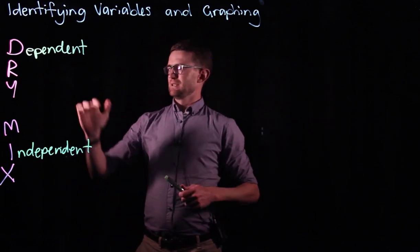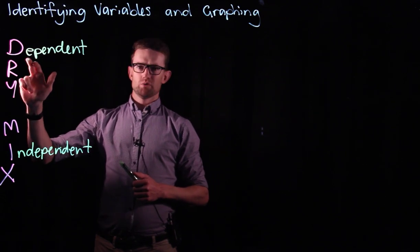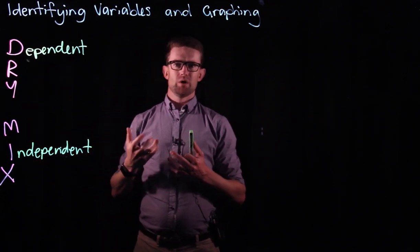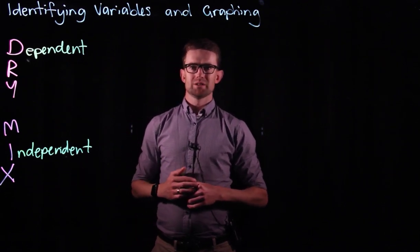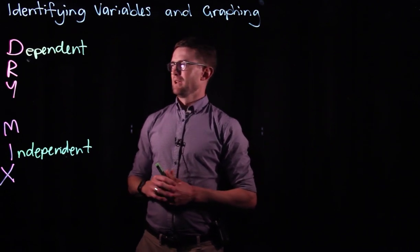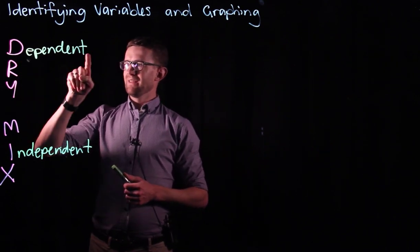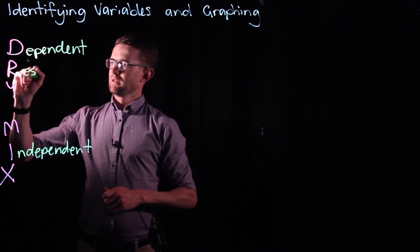And how this works is our dependent variable in an experiment is the one that is our results. It's the one that we don't know what the values are going to be before we actually complete the experiment. And so the way that we remember that, the dependent variable is the result.